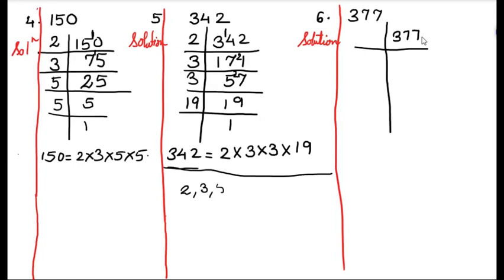Now we will check whether it is divisible by 3. So 3 plus 7 is 10, 10 plus 7 is 17. Is 17 divisible by 3? No. Then 377 is also not divisible by 3. Now what is the test of divisibility of 5? At units place you should have 0 or 5. Here we have 7, so it is also not divisible by 5.